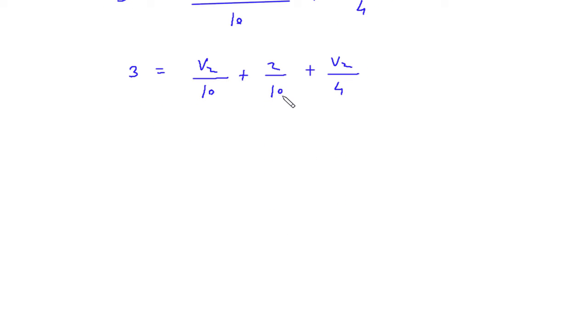So this 2 by 10 or 1 by 5 will go on left side. So it will be 3 minus 1 by 5 is equal to 1 by 10 plus 1 by 4.